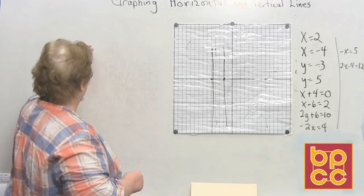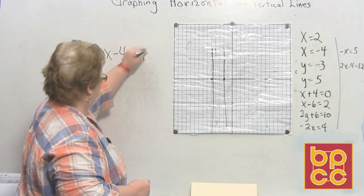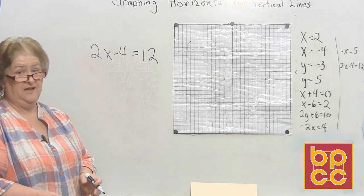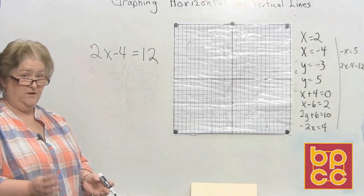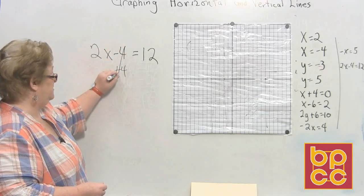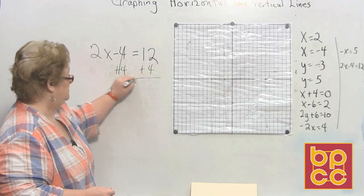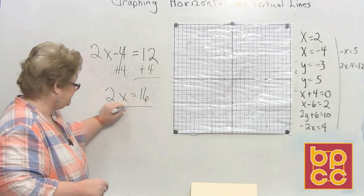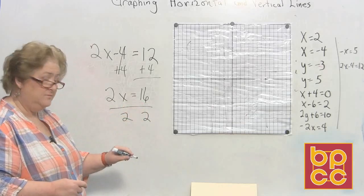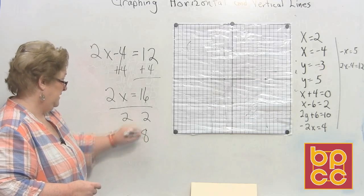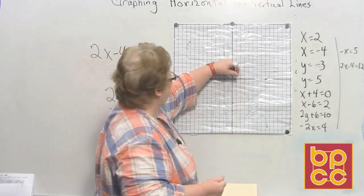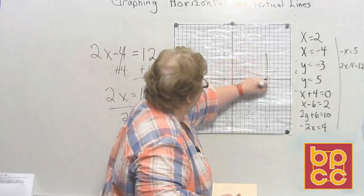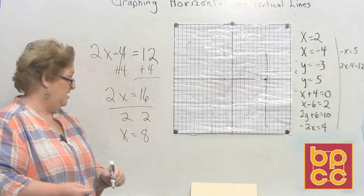Let's do 2X minus 4 equals 12. Two things you're going to have to do here: move the 4 to the other side, then divide by the number of X's. So we add 4 to both sides — I now have 2X equals 16. But I have to divide by 2, so when I divide both sides by 2, X will be equal to 8. I'll go over on the X axis to 8, and it must physically cross over itself. There is a graph of X equal to 8.